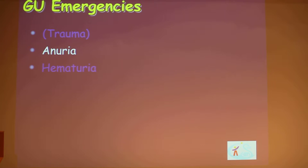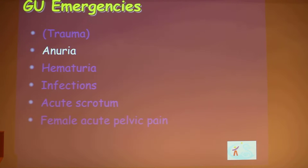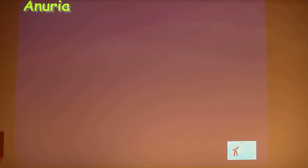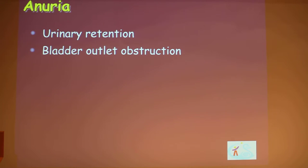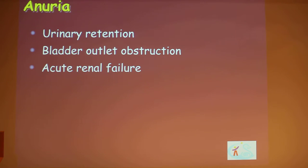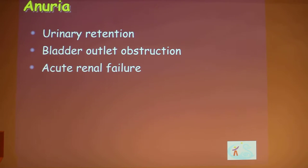I'm going to talk about some other important and common reasons for imaging in genitourinary emergencies. First, I'd like to talk about anuria. Anuria is probably the most acute emergency presentation of acute renal failure. However, there are other reasons for anuria: urinary retention and bladder outlet obstruction, in addition to acute renal failure. Especially in children, urinary retention can be due to neurological reasons like neurogenic bladder, or medication, or even constipation.